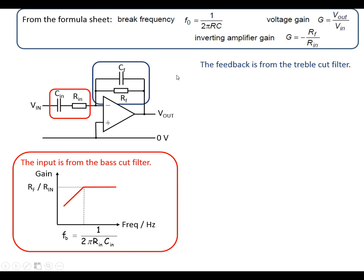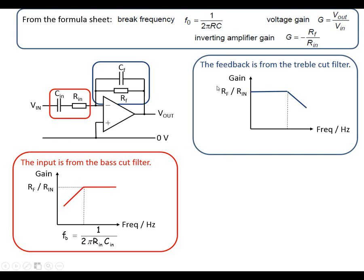We look at the feedback part. The feedback is the same as the treble cut filter, and again we get a maximum gain of RF over RN. This time the break frequency is using the resistor and the capacitor in the feedback part of the circuit.